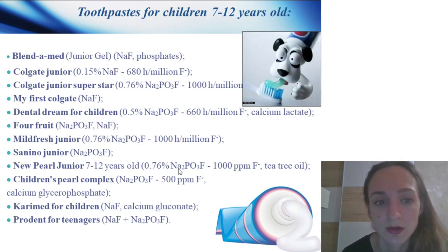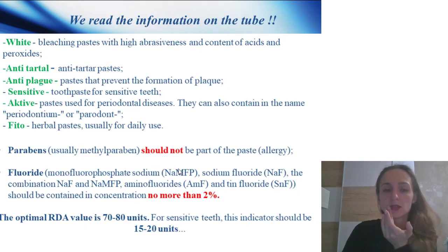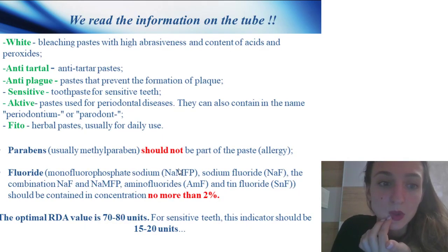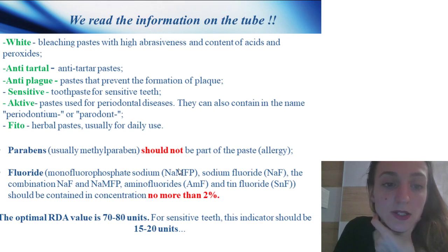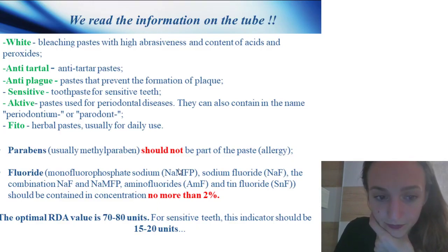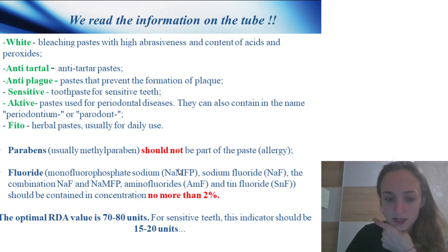From seven to twelve years old: Blendamed Junior Gel, Colgate Junior, Colgate Junior Superstar, My First Colgate, Mild Fresh Junior, and others. When reading information on the tube: white-bleaching paste has high abrasiveness and content of acids and peroxides. Anti-tartar paste, anti-plaque, sensitive, and active types. Parabens should not be part of the paste. Fluoride content should be no more than 2%. Optimal RDA should be noted.